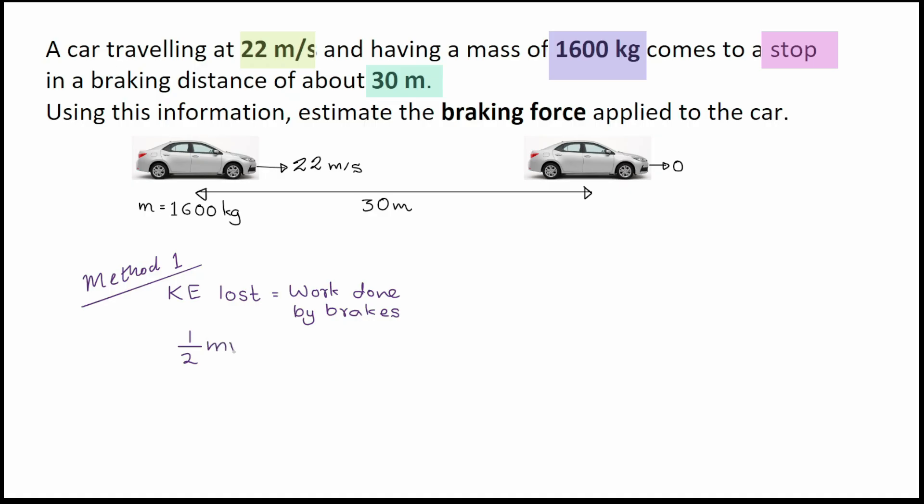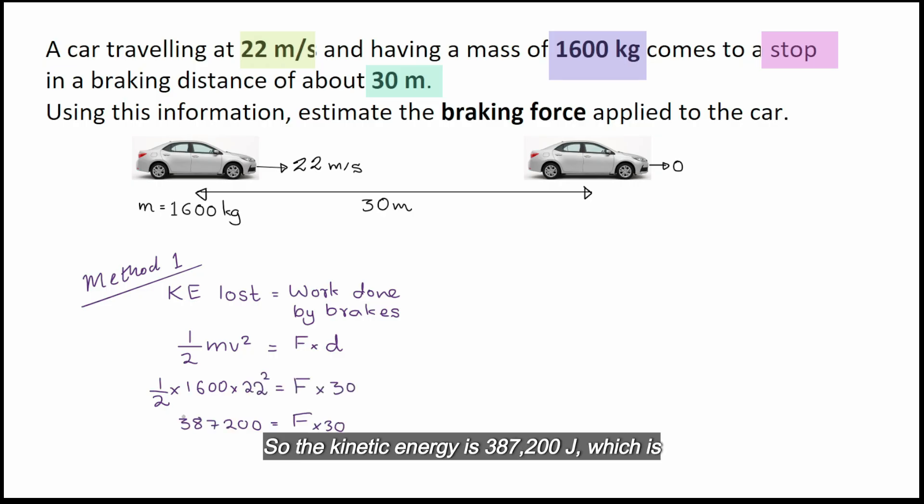Now we can substitute values. This v here is the initial speed, so that's 22 squared. So the kinetic energy is 387,200, which is equal to 30F. So divide both sides by 30.